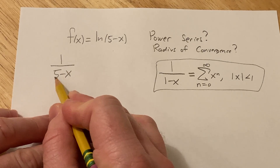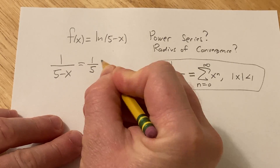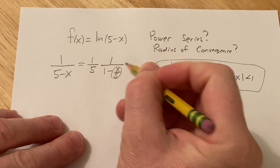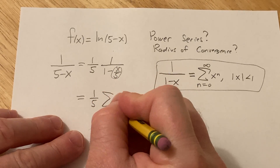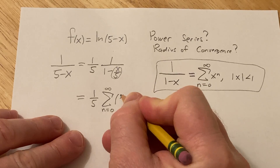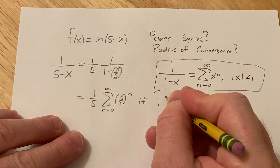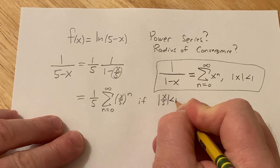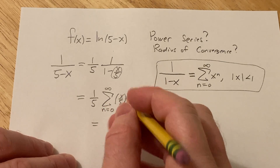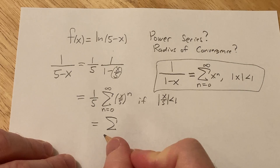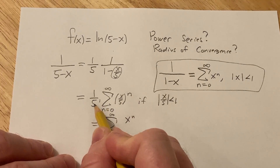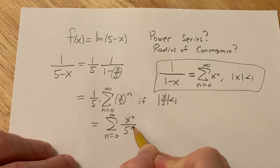The 5 in the denominator needs to become a 1, so we factor out a 5 on the bottom, giving us 1 over 5 times (1 minus x/5). Now it fits the geometric series form, where x/5 is our x. This equals 1/5 times the infinite sum as n runs from 0 to infinity of (x/5) to the n, valid when the absolute value of x/5 is less than 1. Bringing the 5 in, this equals the infinite sum of x to the n over 5 to the n+1.